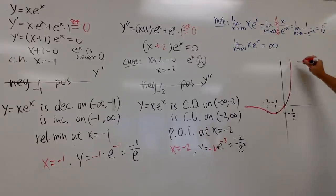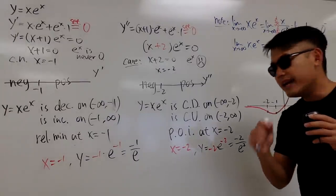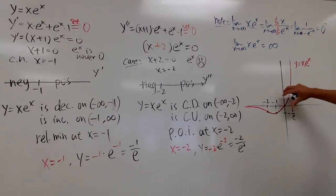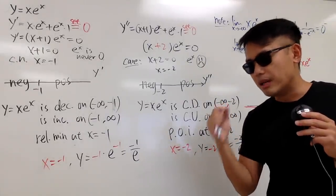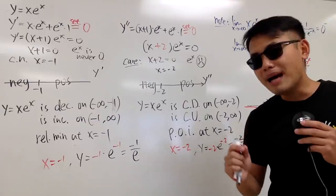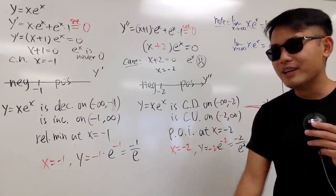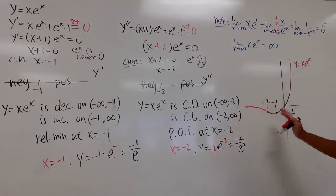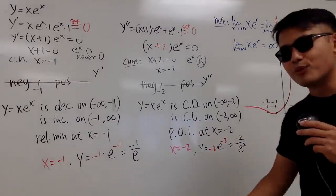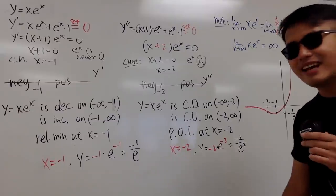This is the graph of y = x·eˣ. If you reflect this graph about the line y = x, you get the graph of the Lambert W function. To make it a proper function, you'd need to restrict to the one-to-one portion — but that will be covered in a future video. This is good enough for a Calculus 1 lesson.